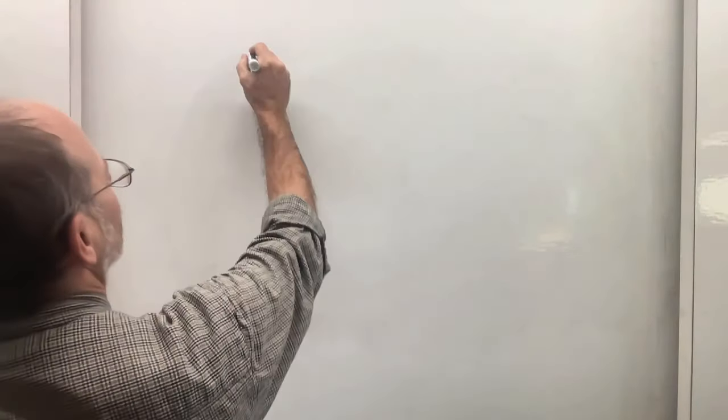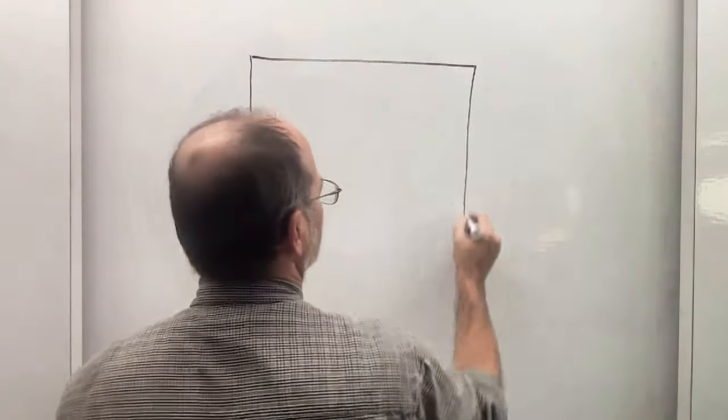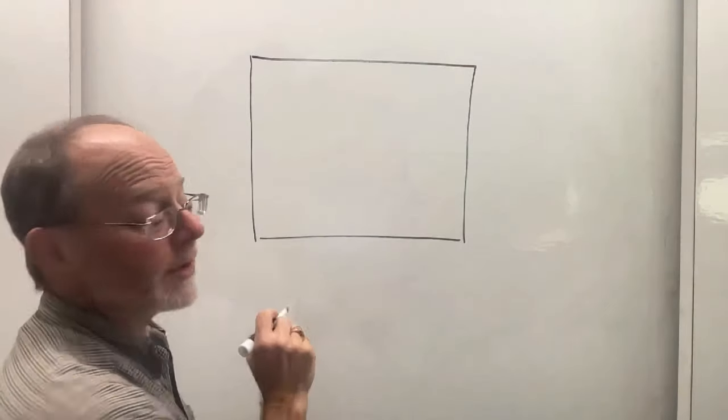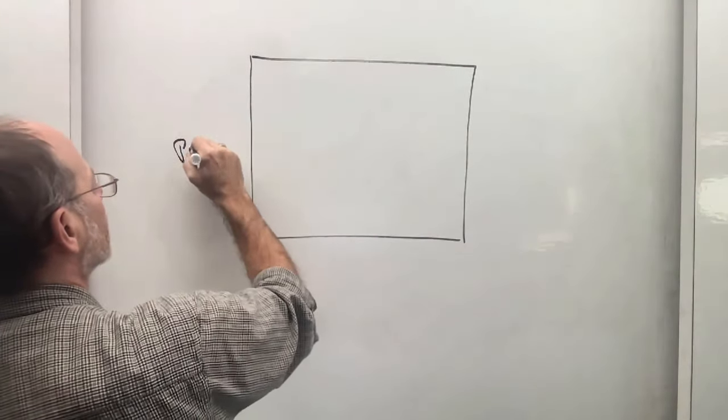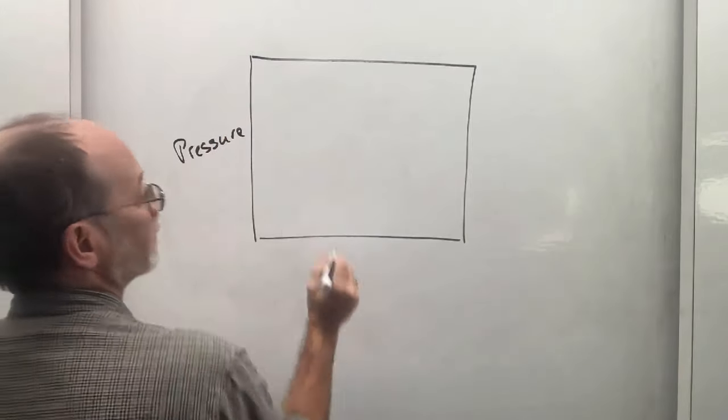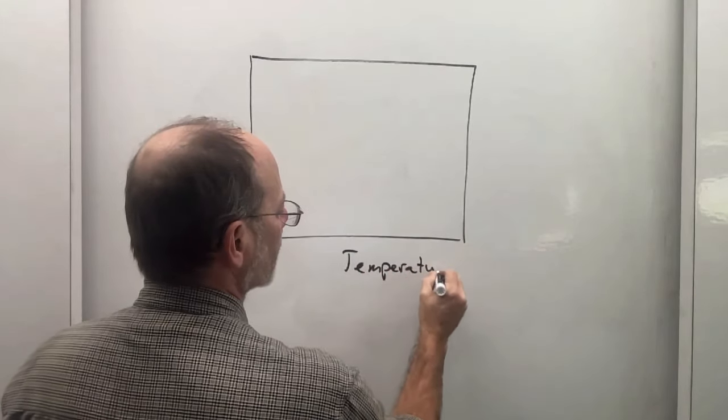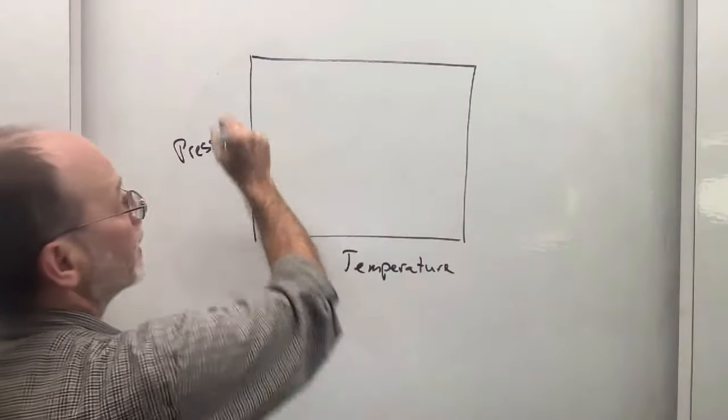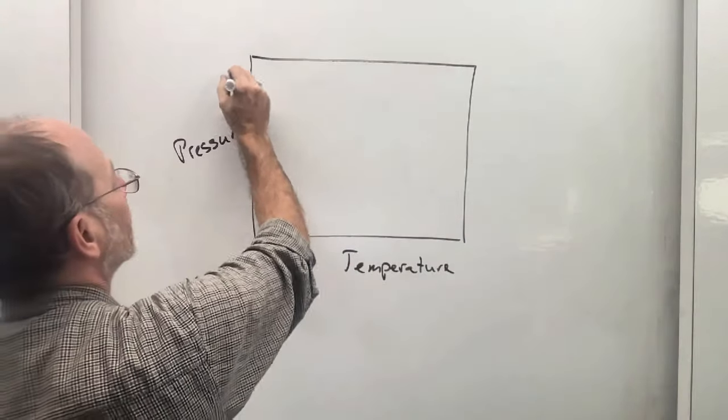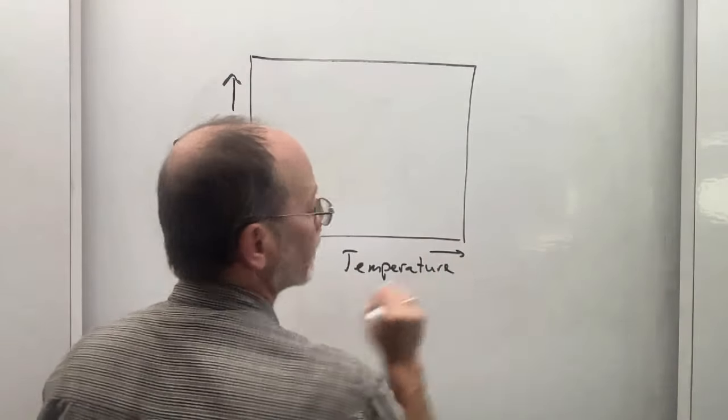Okay, so let's talk a little bit about the aluminous silicate phase diagram. First, we show this on a pressure versus temperature diagram. Pressure increases going upward, temperature increases to the right.